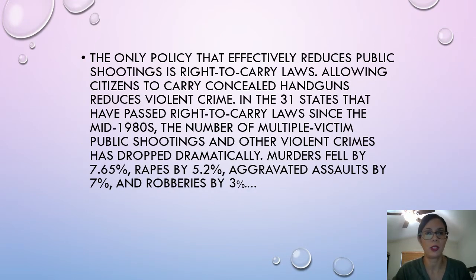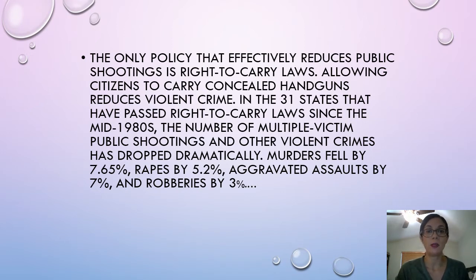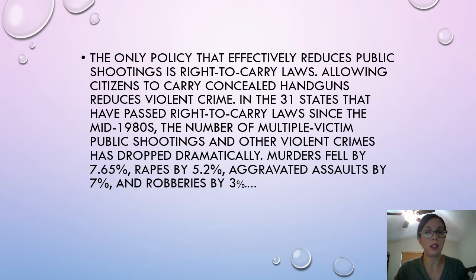Here's the next example about gun control. I'm going to show you both sides of the argument using the same flaw. The side for right-to-carry laws argues that allowing citizens to carry concealed handguns reduces violent crime. In the 31 states that passed right-to-carry laws since the mid-1980s, the number of multiple victim public shootings and other violent crimes dropped dramatically. That's flaw of causation — crime has so many components, such as economic factors and police standards, so right-to-carry laws alone would have a really insignificant impact.